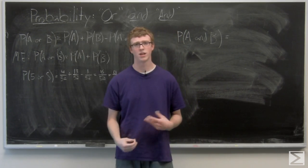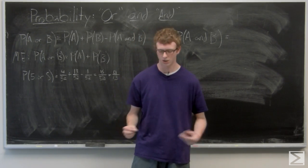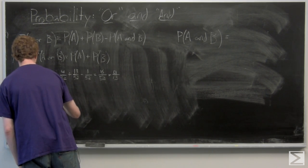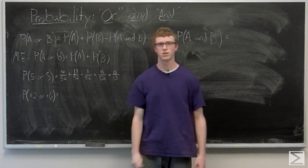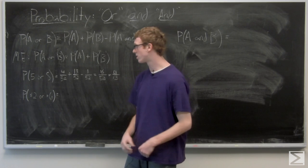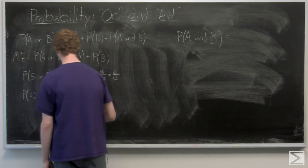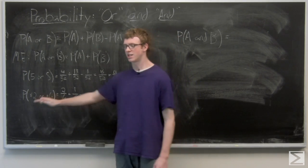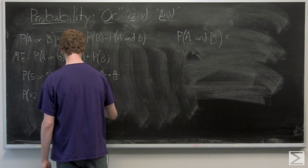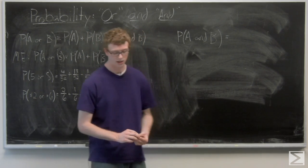Now let's take a look at another example, this time with dice. We're going to look at the probability that a dice roll is less than or equal to two, or it is equal to six. The probability that a dice roll is less than or equal to two — there are two possible outcomes, a one or a two — so that's 2 out of 6. Plus the probability that it equals six, that's 1 out of 6. We don't have to subtract the probability that it's less than or equal to two and equal to six, because that's not possible. So we just have 3 out of 6, or one half. That's how you calculate OR probabilities — it's pretty simple, especially if you know whether or not the events are mutually exclusive.